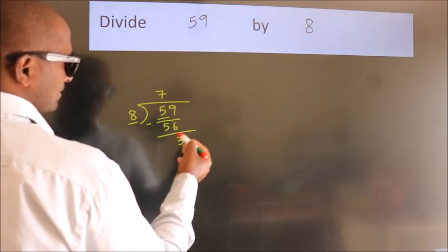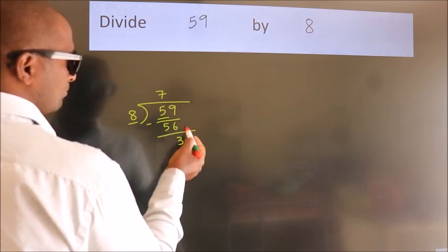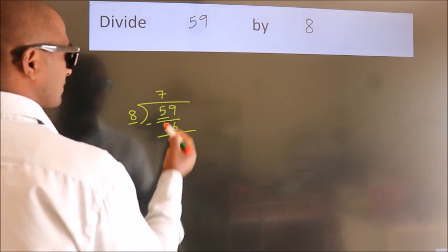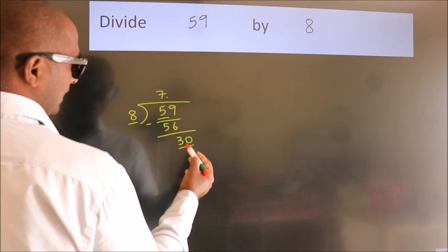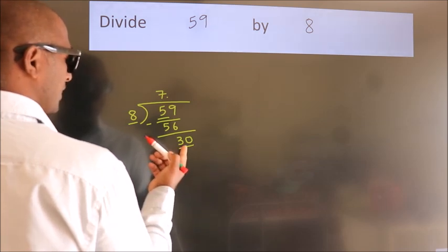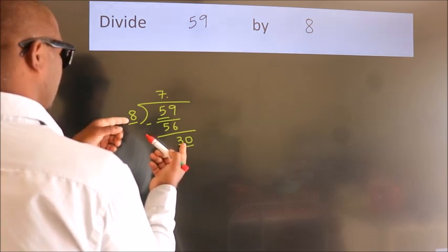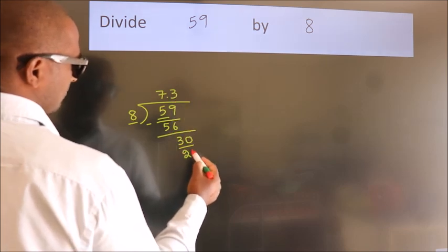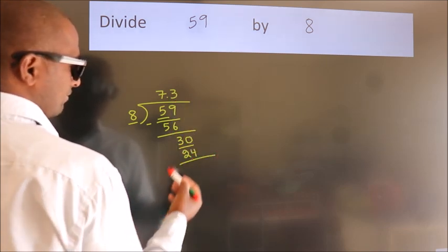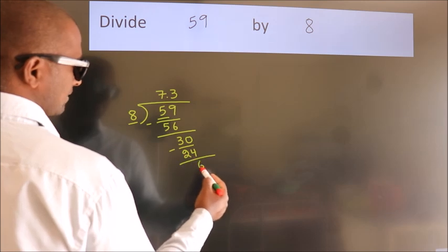After this, no more numbers to bring down. So what we do is put a dot and take 0, so 30. A number close to 30 in the 8 table is 8 times 3 equals 24. Now we subtract. We get 6.